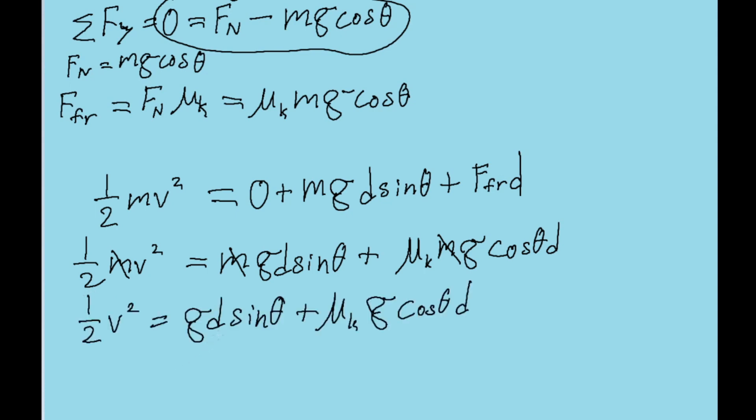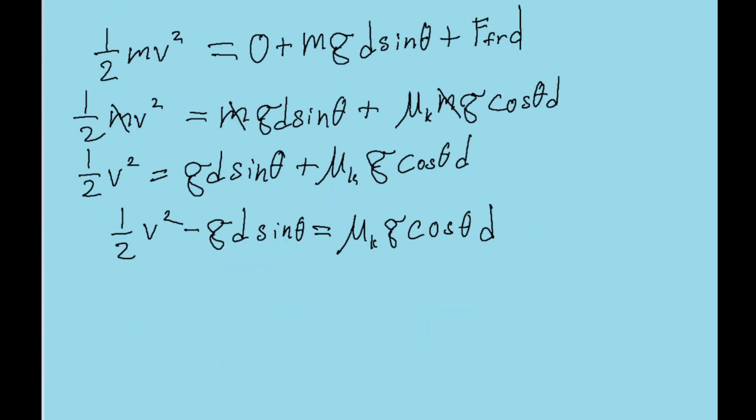And now you might notice that in this equation, every variable is known or given, except for the one we're trying to find. So what we need to do now is algebraically solve for the coefficient of friction. We can start doing this by getting the term that has the coefficient on its own. So let's subtract both sides of the equation by this term, like this. And now let's get the coefficient completely on its own by dividing both sides of the equation by g cos theta d.